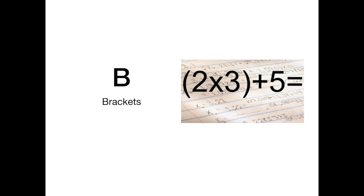B stands for brackets, so if you have an equation with brackets in, just like this example here 2 times 3 plus 5, you would do the bit in brackets first. So that's always the case. If you have brackets in an equation they must be done first.